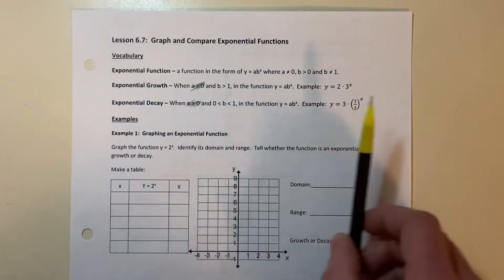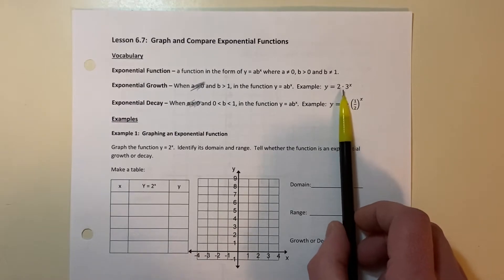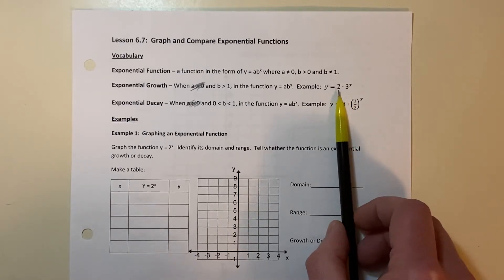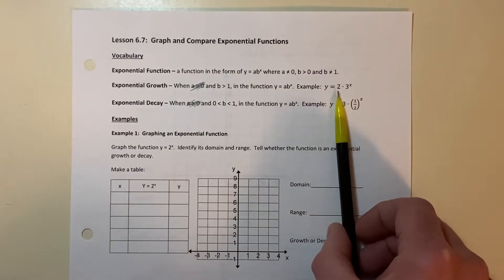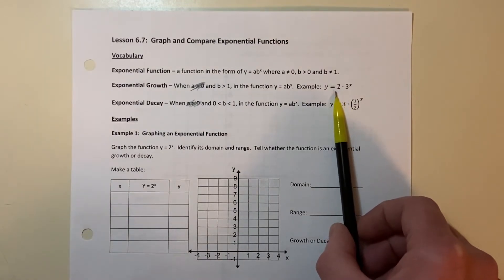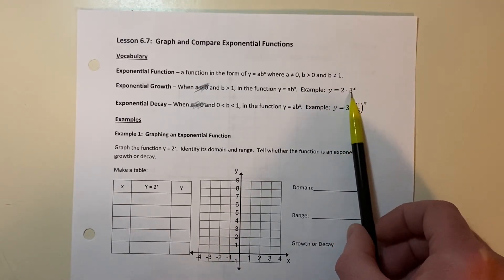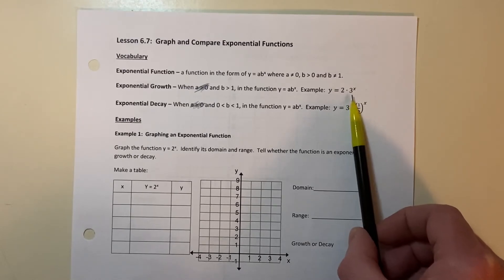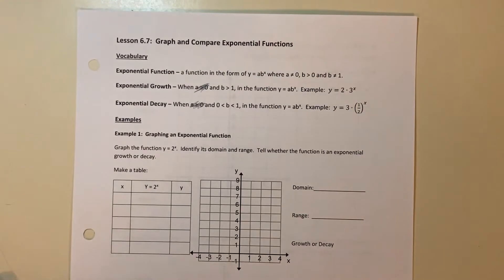When we graph these, the number out front is like your starting amount in a word problem or real-life application. If you have two of these things or three of these things, the b value is going to be your growth factor or your decay factor. That's kind of how these are set up.